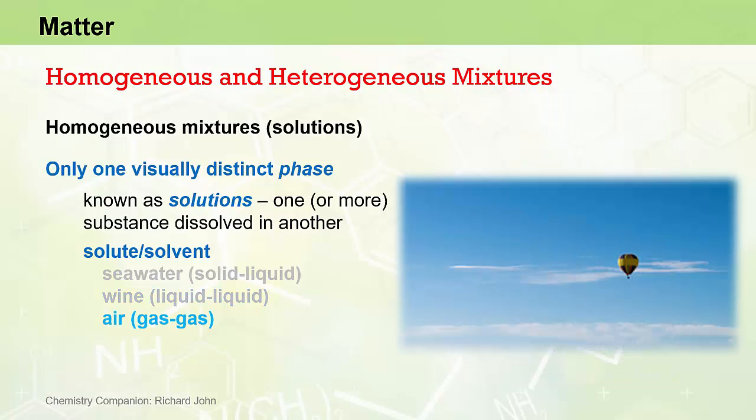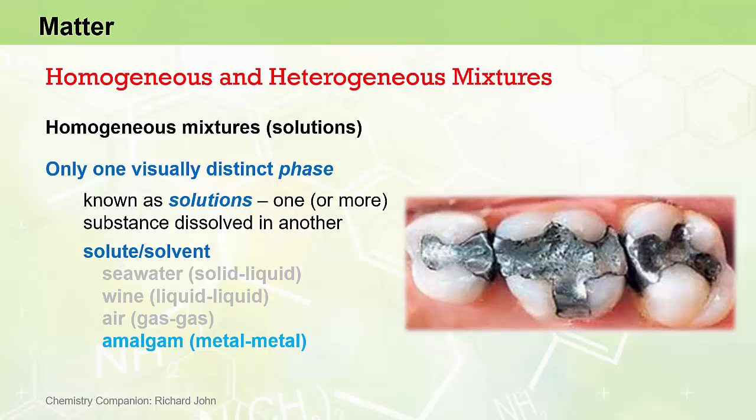Air can be considered a homogeneous mixture where oxygen and other trace gases are essentially dissolved in nitrogen gas—a gas-gas solution. Amalgams are metal-metal solutions where one metal is dissolved in another, typically involving mercury.